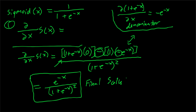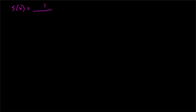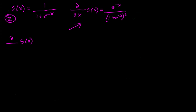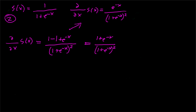Now we need to convert this into a more user-friendly format. The sigmoid function is 1 over 1 plus e to the negative x, and its derivative is e to the negative x divided by (1 plus e to the negative x) squared. To adjust this, we add and subtract 1 in the numerator, which doesn't change the value. This gives us (1 minus 1 plus e to the negative x) divided by (1 plus e to the negative x) squared. We then split this into two fractions: (1 plus e to the negative x) over (1 plus e to the negative x) squared, minus 1 over (1 plus e to the negative x) squared.